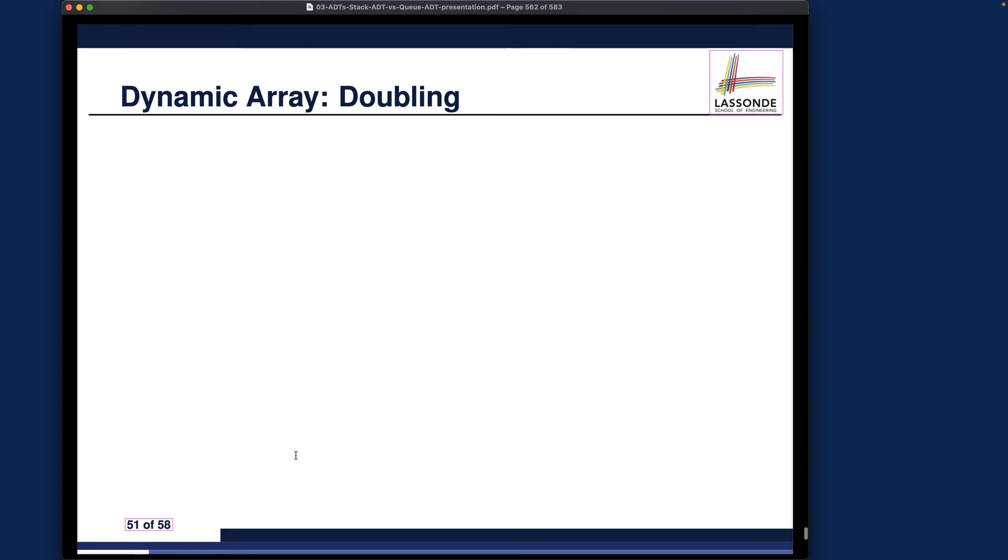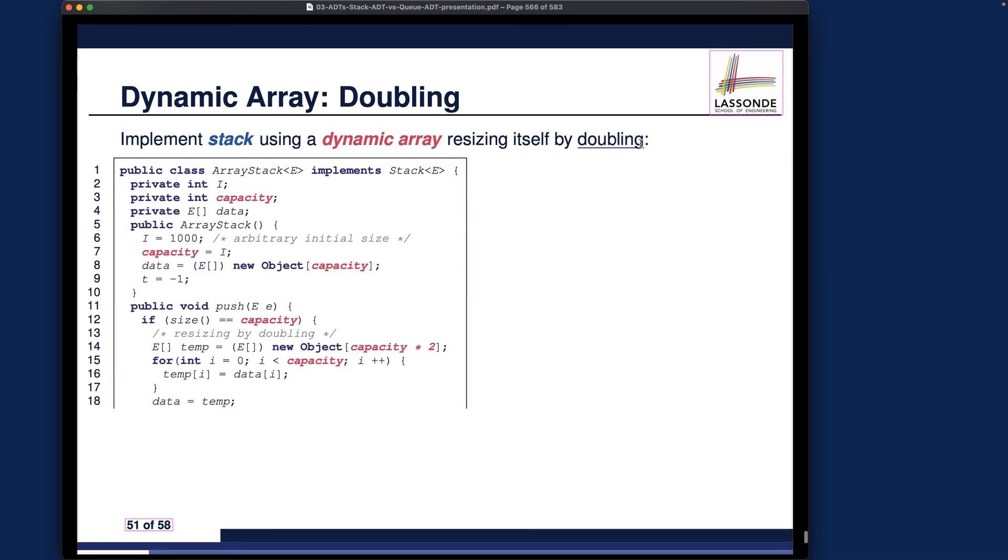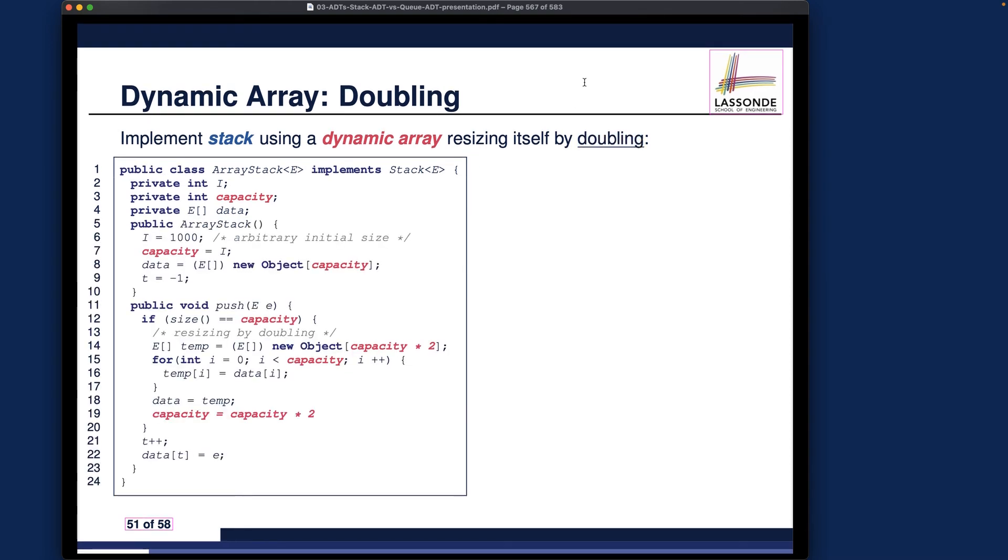And the second strategy, I want to just compare it side by side before I go on to do the analysis. The second one is called doubling strategy. So we want to still implement a stack using dynamic array. But now the resizing strategy we adopt is called doubling. Meaning that over here, we don't have that fixed constant anymore. We still have our capacity. But now whenever you want to do the resizing over here,